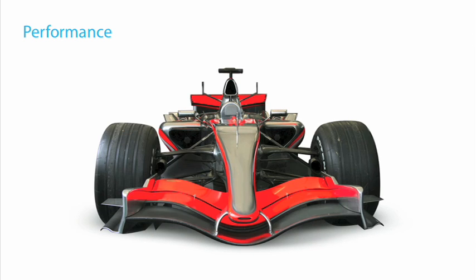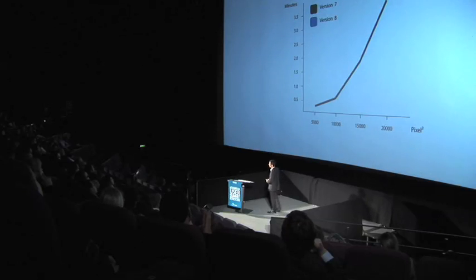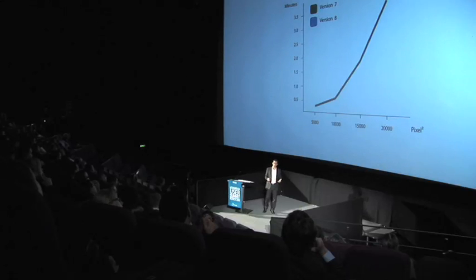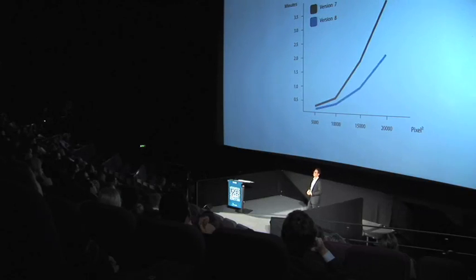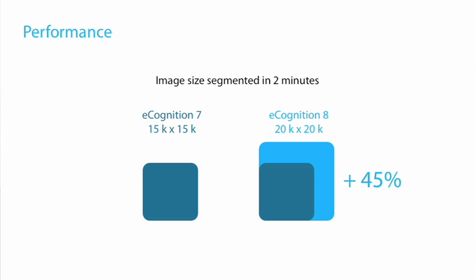Development for eCognition 8 lasted close to two years, and we implemented more than 500 individual new features. Looking at segmentation performance on a 20,000 by 20,000 pixel data set at scale parameter 50: that took close to four minutes in version 7, but in version 8 it was brought down to merely 1.5 minutes. In terms of area segmentable within two minutes, eCognition 7 handled 15,000 by 15,000 pixels, while eCognition 8 handles 20,000 by 20,000 pixels — a performance increase of 45%.